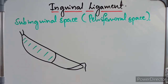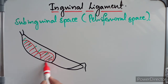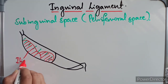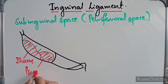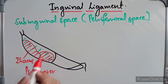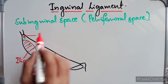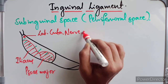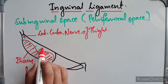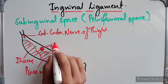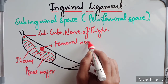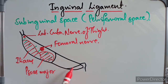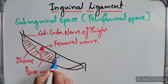In the sub-inguinal space we have two major muscles: the iliacus and the psoas major. We also have a nerve called the lateral cutaneous nerve of the thigh, and then we have the femoral nerve. The femoral sheath is also present here, and it has three compartments.